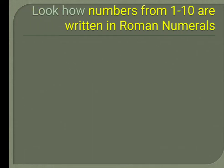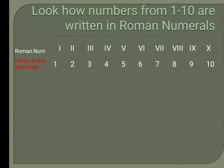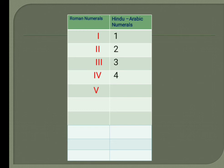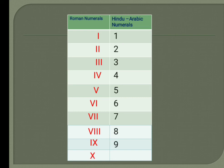Look how numbers from 1 to 10 are written in Roman numerals. I is 1, II is 2, III is 3, IV is 4, V is 5, VI is 6, VII is 7, VIII is 8, IX is 9, and X is 10.